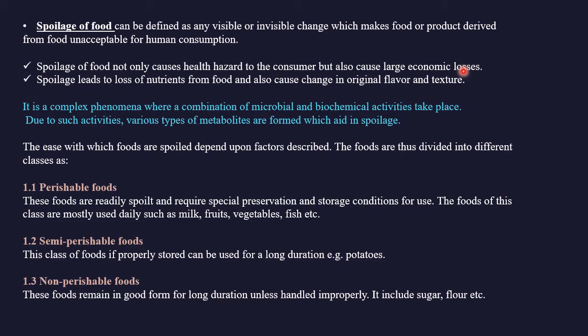Spoilage leads to loss of nutrients and causes changes in original flavor and texture. Spoilage of food is a complex phenomenon involving a combination of microbial and biochemical activities. During metabolism of particular components from food, various types of metabolites are formed which aid in spoilage. The ease with which foods are spoiled depends on certain factors, and foods are thus divided into different classes.